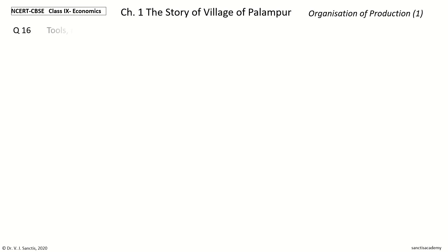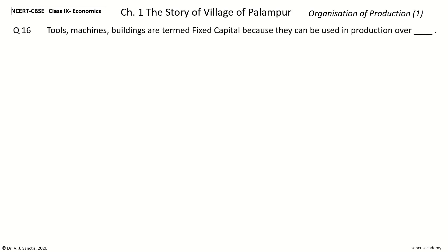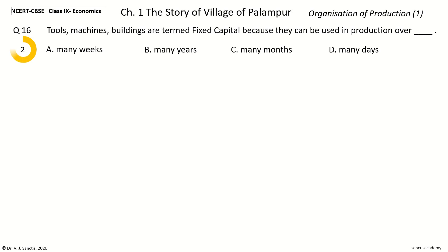Question 16: Tools, machines, and buildings are termed fixed capital because they can be used in production over dash. The options are many weeks, many years, many months, or many days. The answer is many years. So, tools, machines, and buildings are termed fixed capital because they can be used in production over many years.